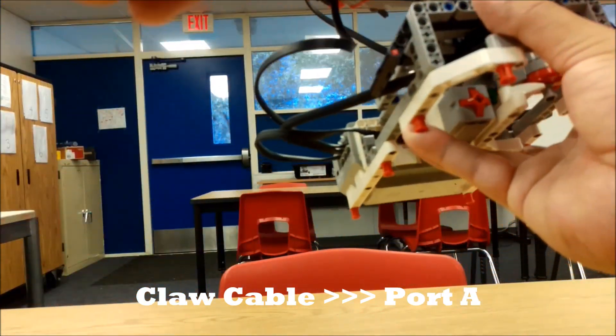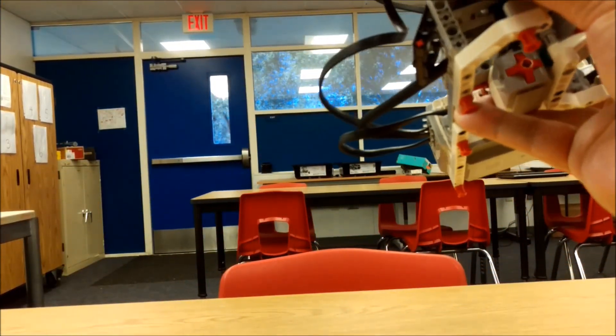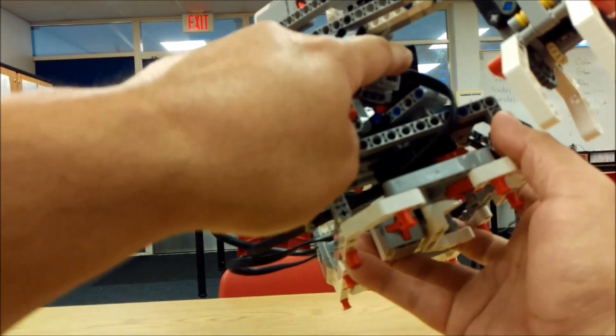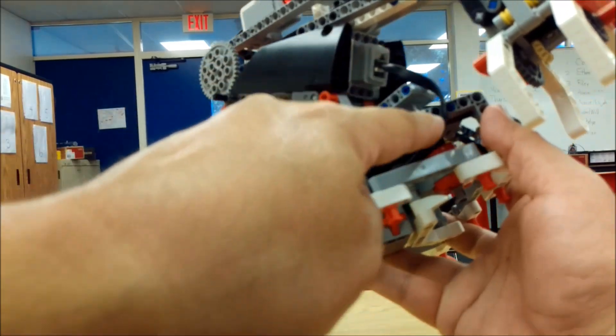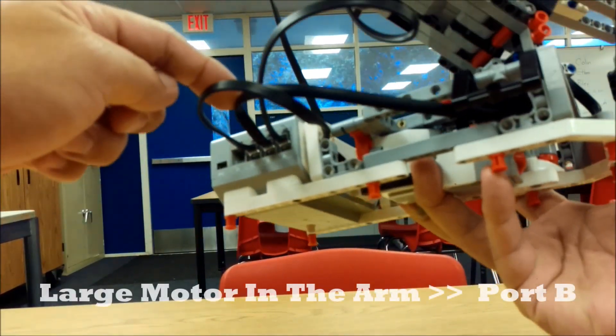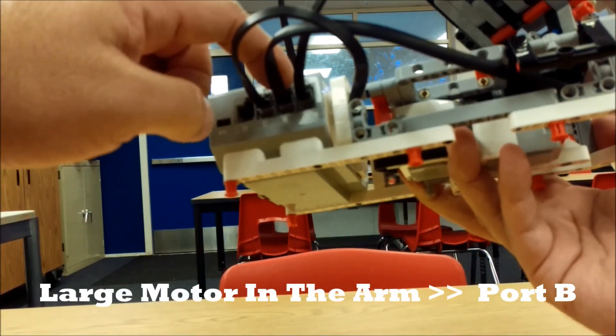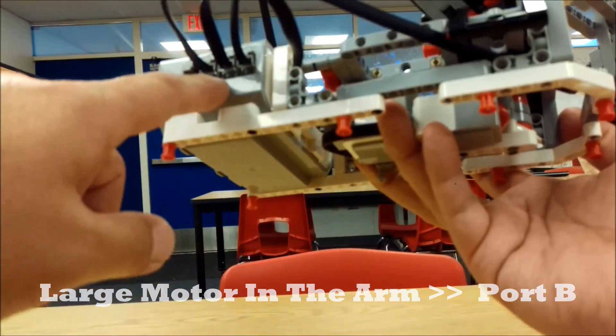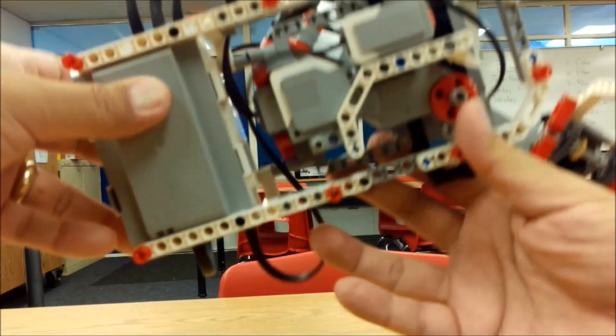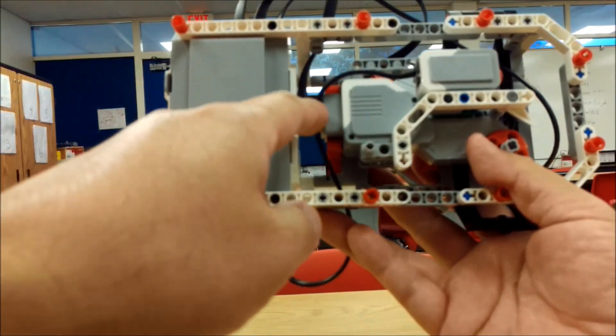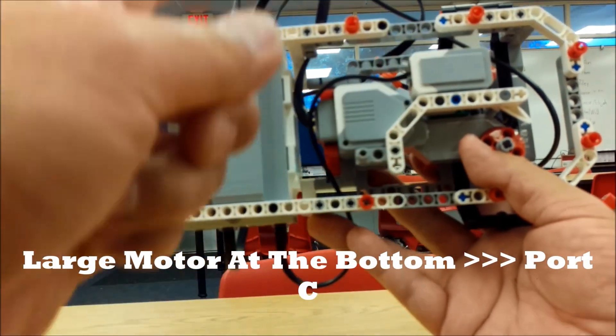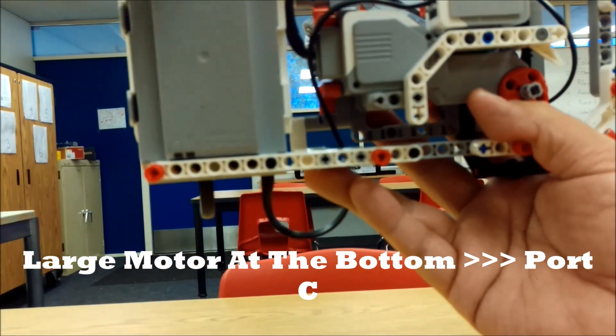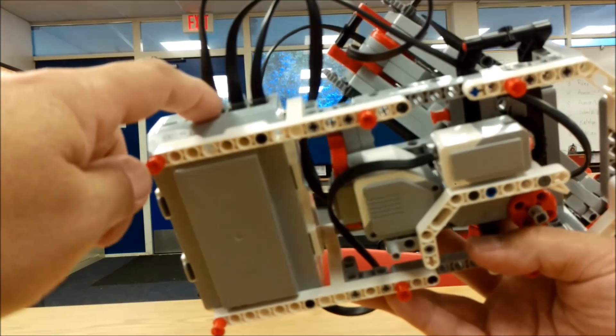Then I'm going to go here to this large motor right here. This is the one that's actually in the arm. If I follow this cable, that one's going to go into port B. So again, the large motor that's in the arm is going to B. And then lastly, this large motor down here that actually rotates the robot arm. If I follow that cable, that's a short 10 inch cable and that's going to go into port C.